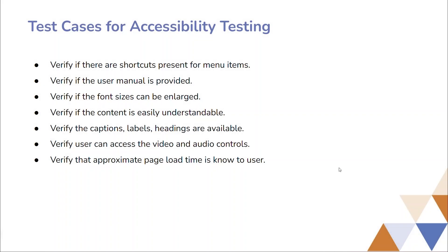Next we'll talk about some sample test cases for accessibility testing. We have to verify if there are shortcut keys present for menu items, verify if the user manual is provided, verify if the font size can be enlarged, verify if the content is easily understandable, and verify the caption levels, headings, video and audio controls, and that approximate page load time is known to the user.